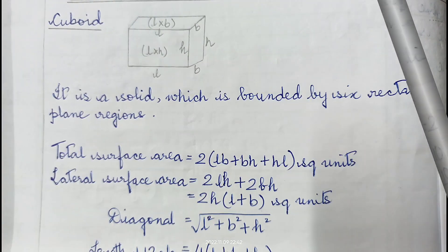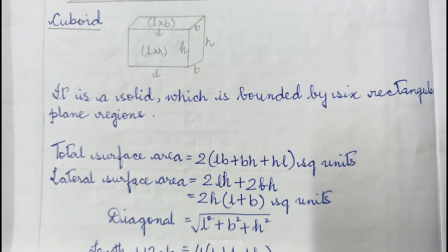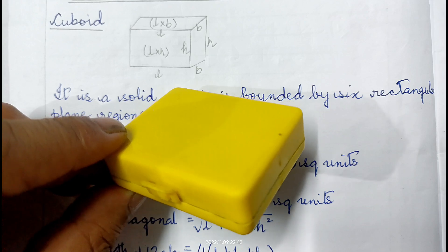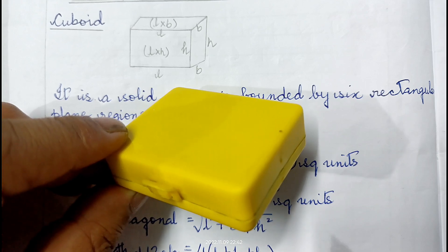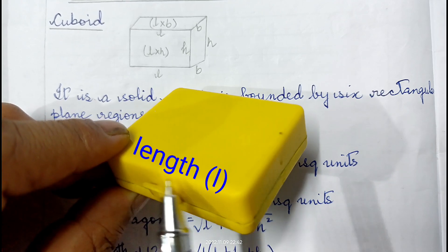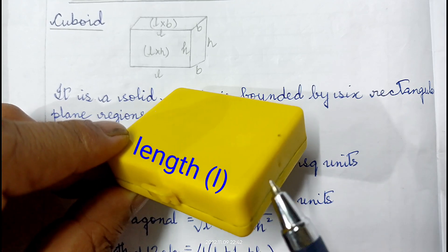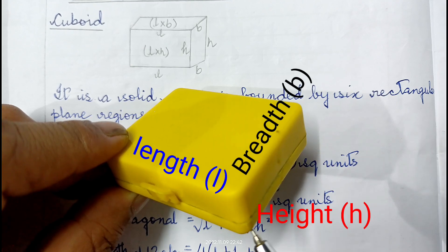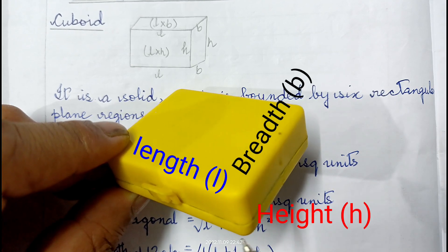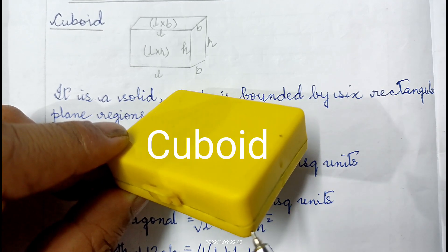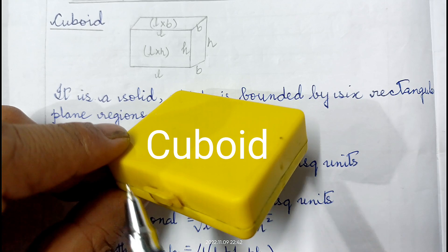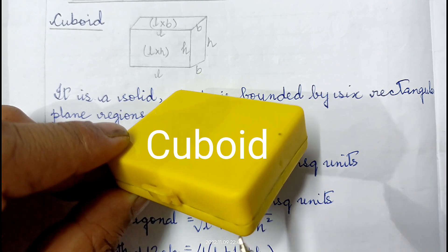In exercise 13A the sums are based on cube and cuboid, so let me discuss the formulas. As you can see, I am holding one small box. Here this is length, this part is breadth, and this part is height. These types of figures are called cuboids, when length, breadth, and height are of unequal length.